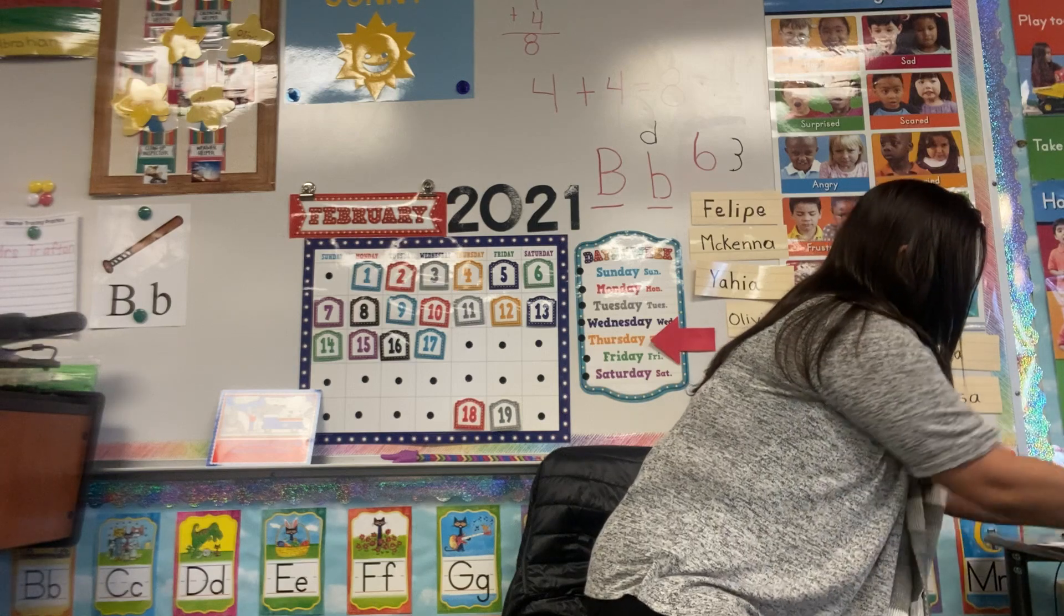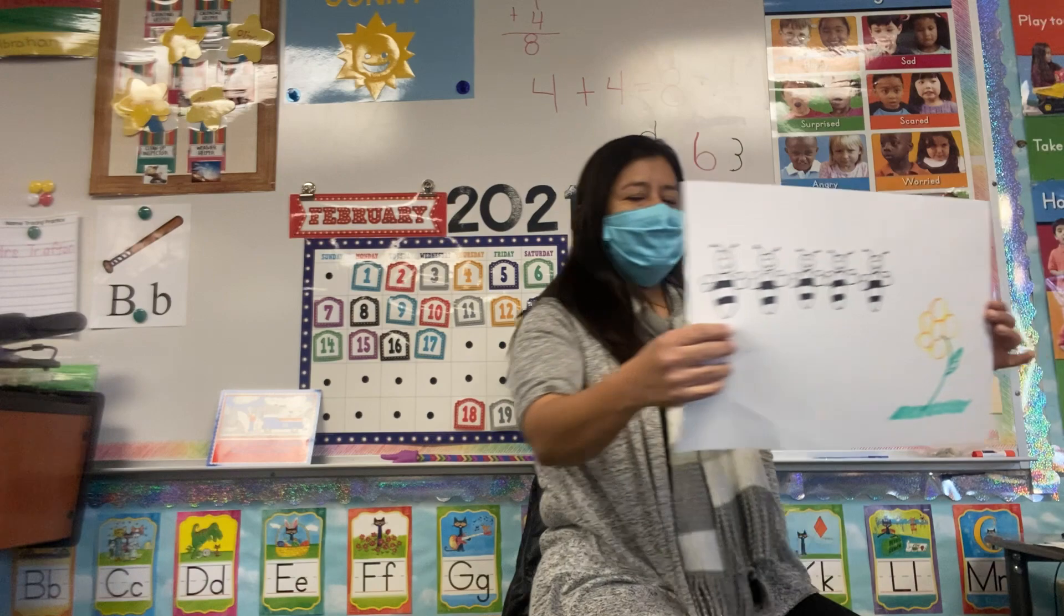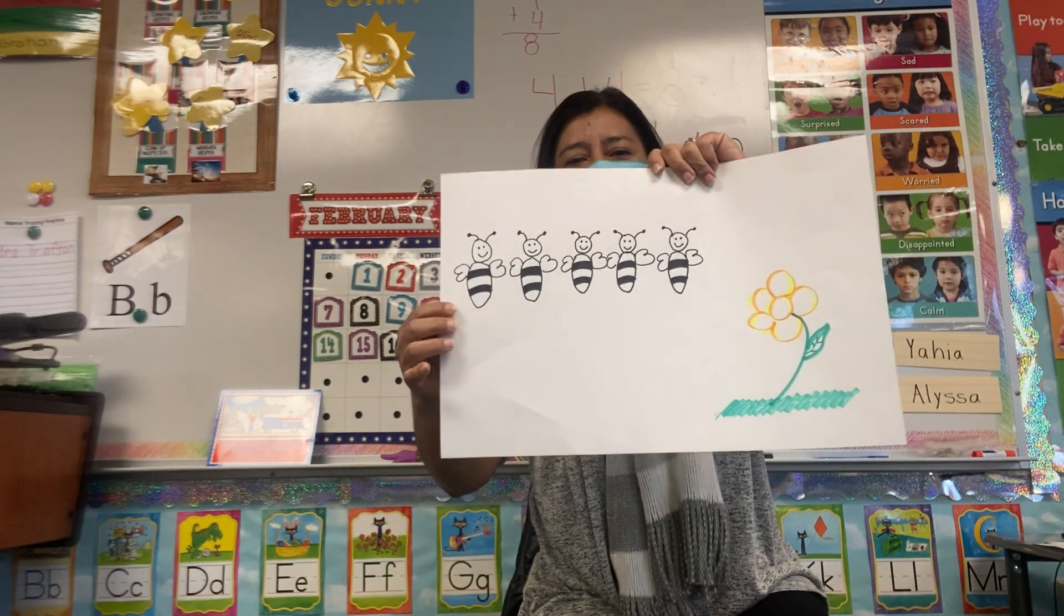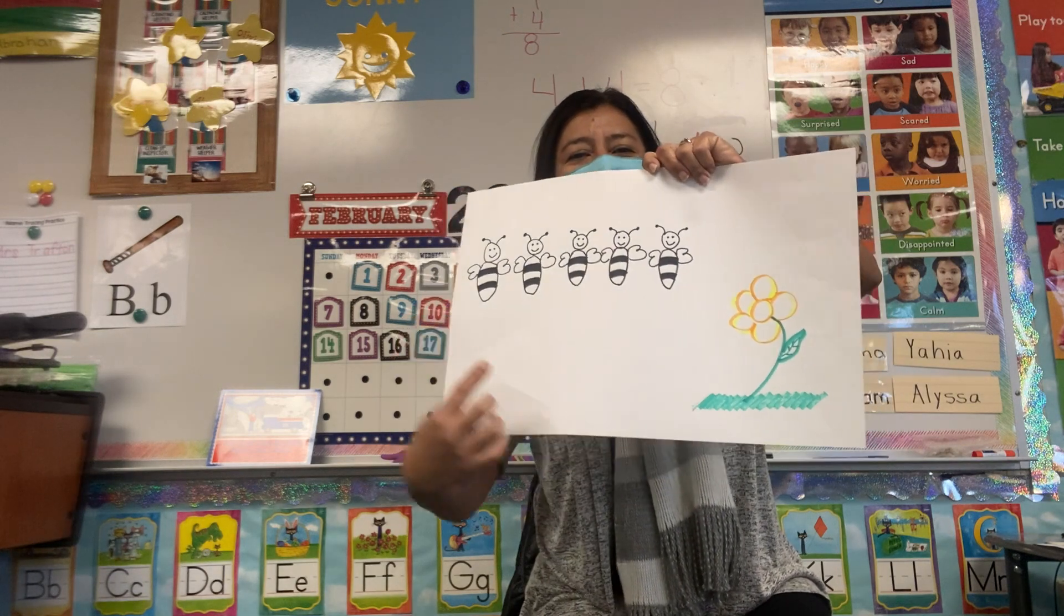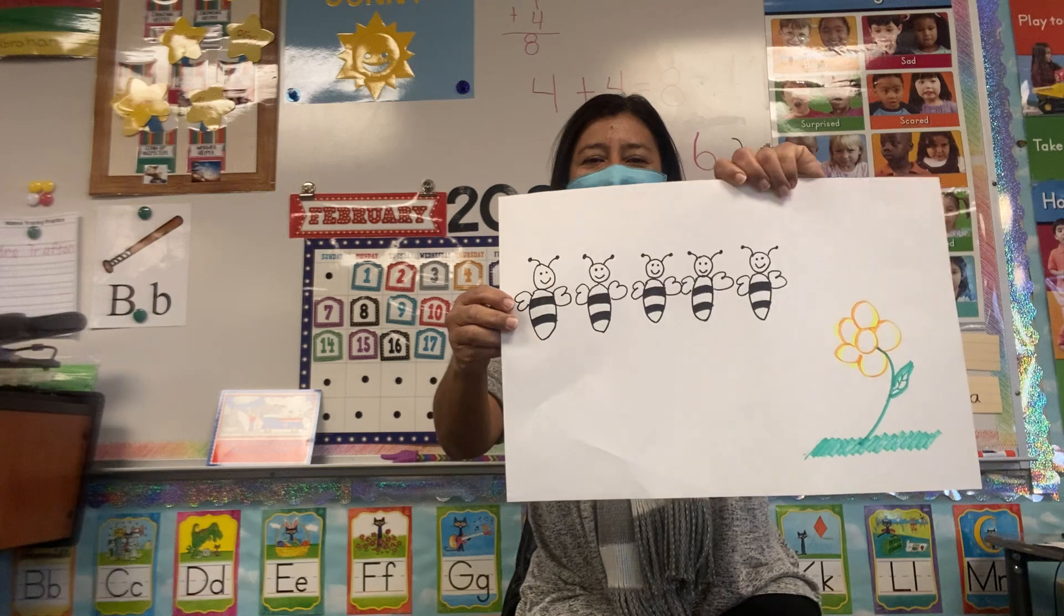And our last one. Okay, so now we have five bees, and they need to go find another flower now. Let's count all the bees that we had.